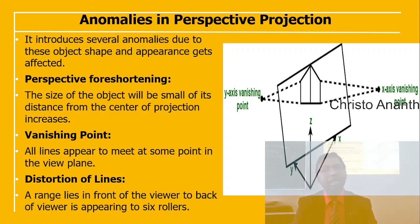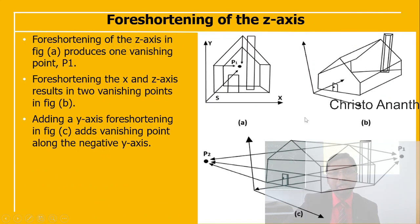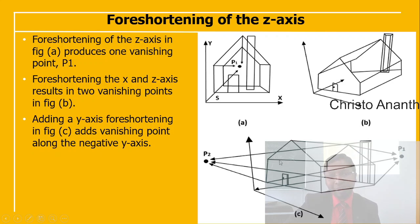All lines appear to meet at some point in the view plane, causing distortion of lengths across the range from front to back of the viewer. A house, for example, has x and y vanishing points corresponding to x, y, and z axes. Foreshortening of the z-axis produces one vanishing point; foreshortening of the x and z axes results in two vanishing points; adding y-axis foreshortening gives three vanishing points: P1, P2, and P3.